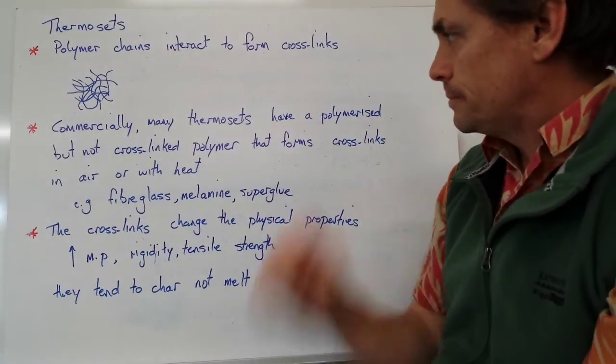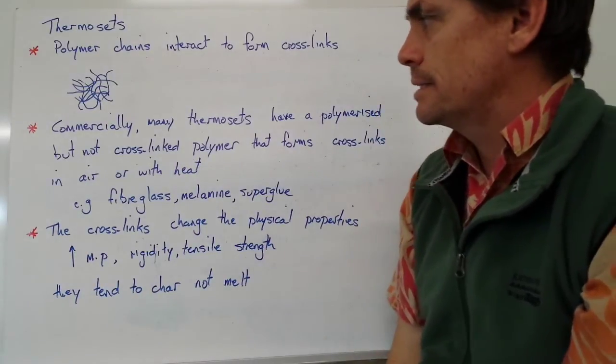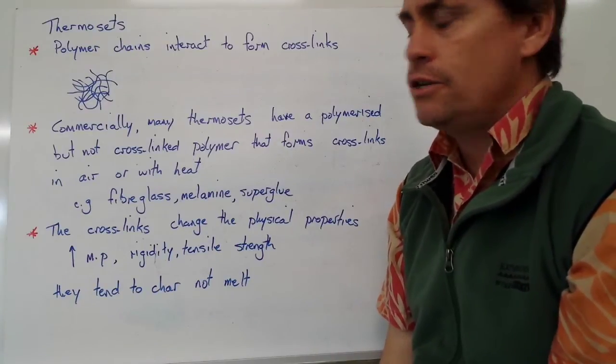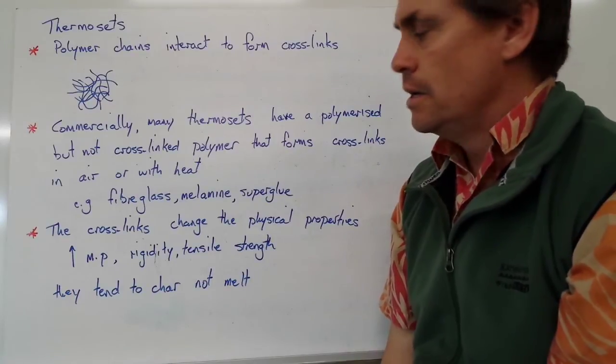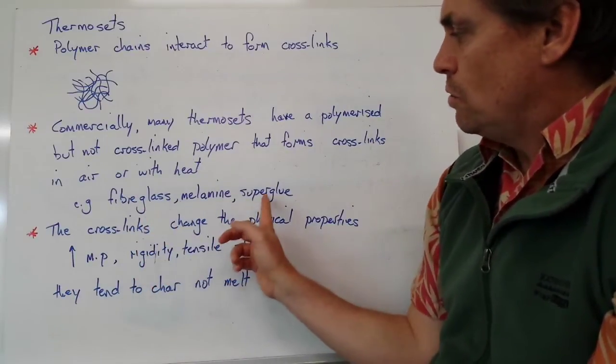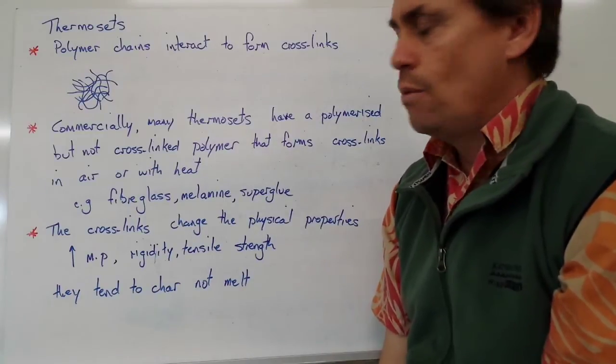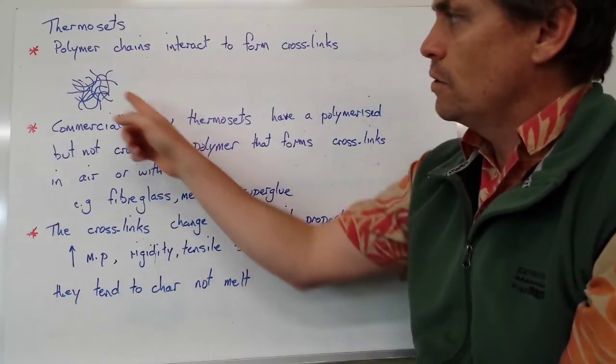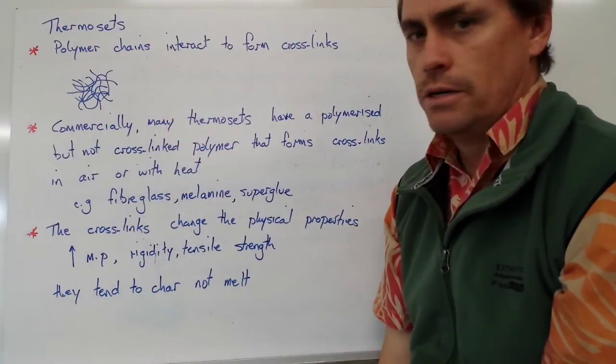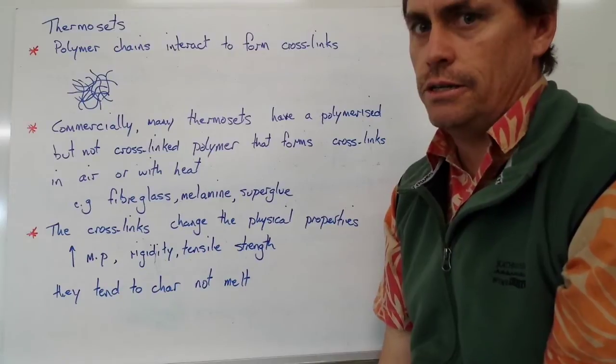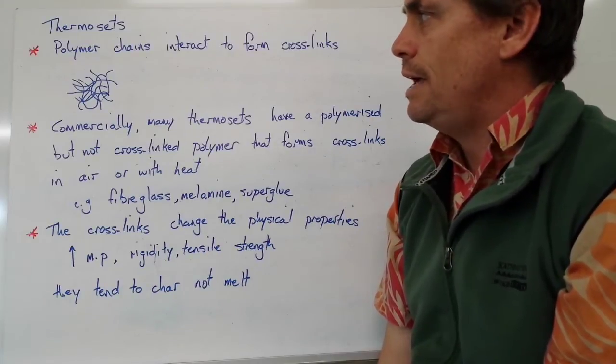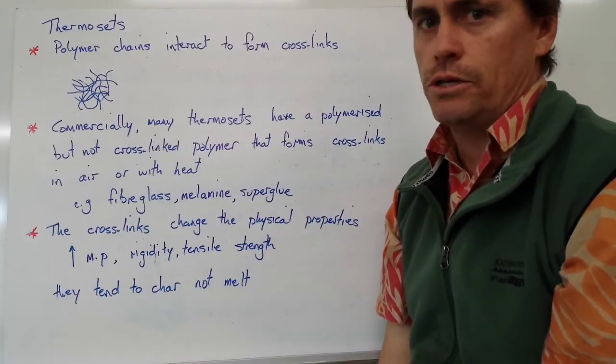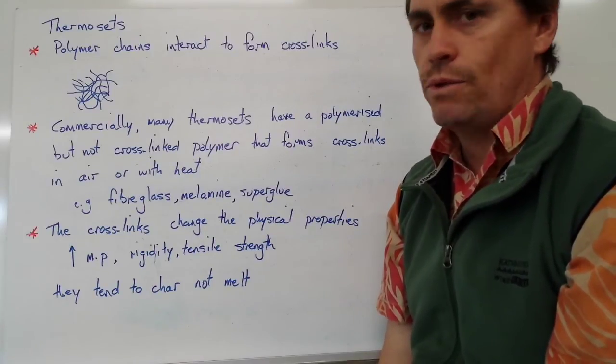Commercially, many thermosets are available in a non-cross-linked form. An example could be fibreglass resin or superglue, where upon contact with either air or heat, they form the cross-linking structure. We store them in the non-cross-linked structure. Once we expose them to heat or air, they form that cross-linked structure, which gives us some time for the molecule to set.